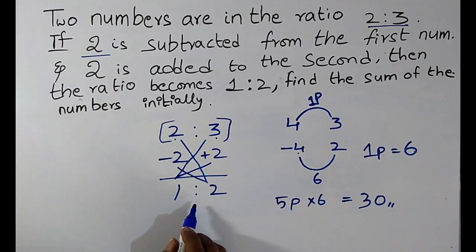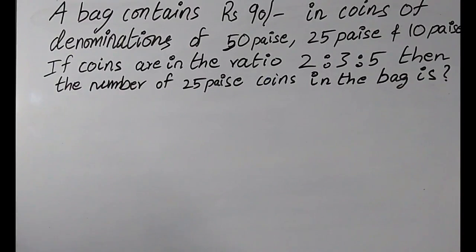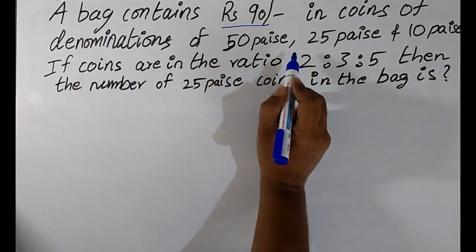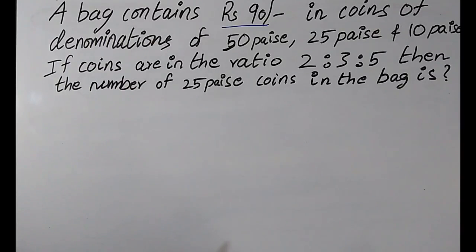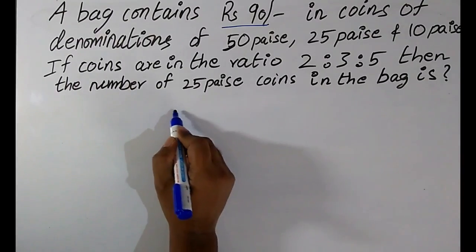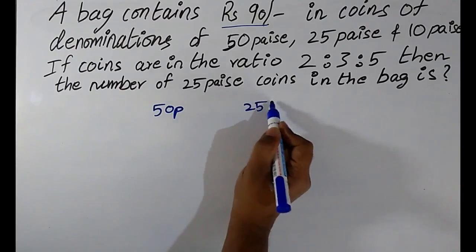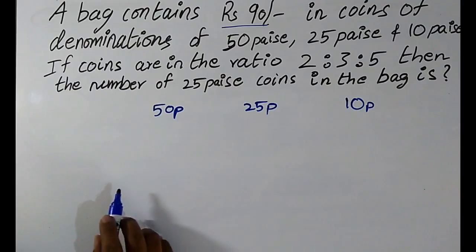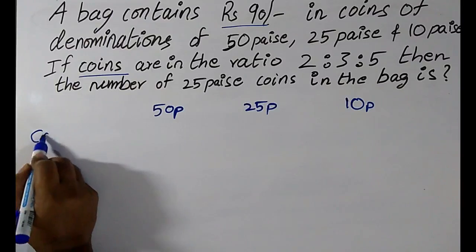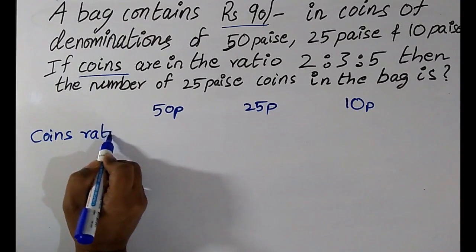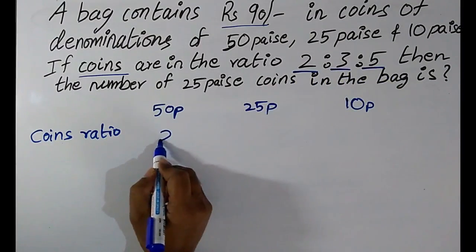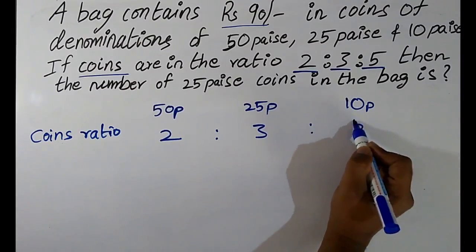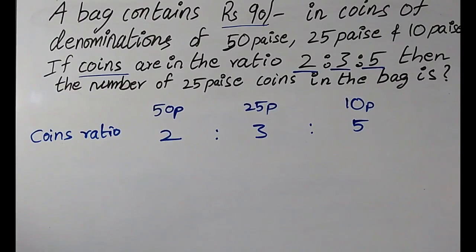If you are new to these types of problems, I have explained 5 to 6 problems in the previous video; you can go through the link in the description box. Next question: a bag contains rupees 90 in coins of denominations 50 paise, 25 paise, and 10 paise. If the coins are in the ratio 2:3:5, then the number of 25 paise coins in the bag is?